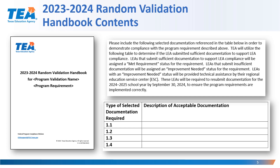The following section of the handbook is of great importance to LEAs that are in preparation for assembling the documentation requested to be submitted. LEAs are asked to include selected documentation to demonstrate compliance with the program requirement. LEAs that submit sufficient documentation will be assigned a met requirement status, while LEAs that submit insufficient documentation will be assigned an improvement needed status.